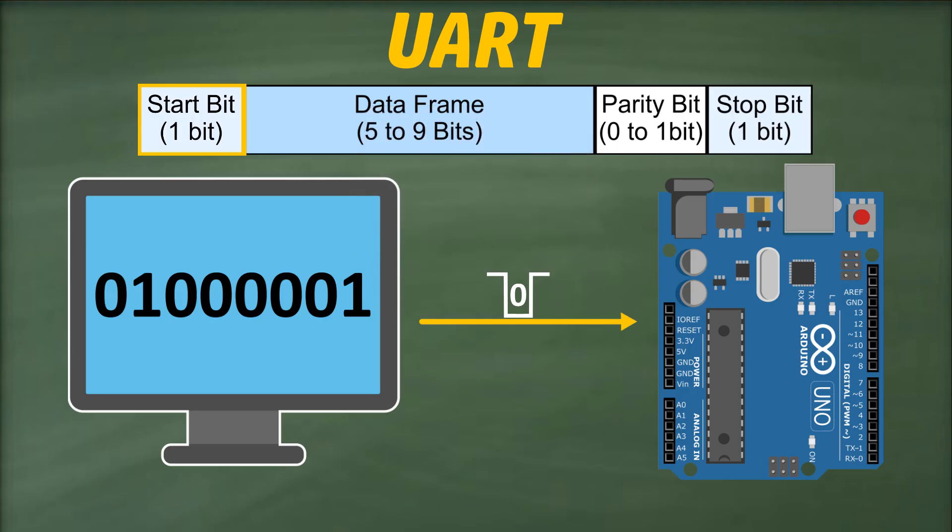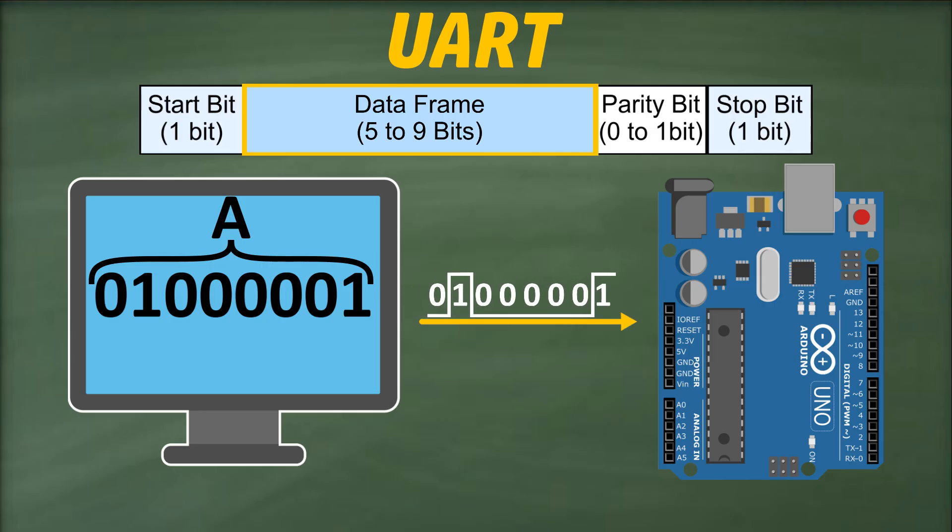The start bit is followed by the data bits, which are the actual data bits that we want to send. So imagine, if we want to send a letter A, then this letter will be converted to binary, and its binary equivalent becomes the data bits for this particular data packet. The data can be 5, 6, 7, 8, or 9 bits long, but 8-bit data is the most common. Usually, both the sender and the receiver agree upon the length of the data bits in advance.